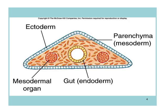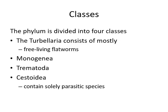Endoderm is considered part of the gut. The phylum Platyhelminthes is divided into four classes: one free-living class — Turbellaria, consisting of mostly free-living flatworms such as planaria — and three parasitic classes: Monogenea, Trematoda, and Cestoidea.